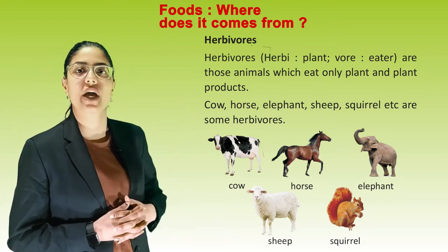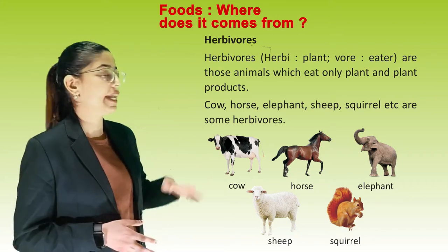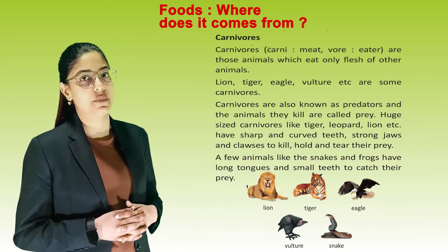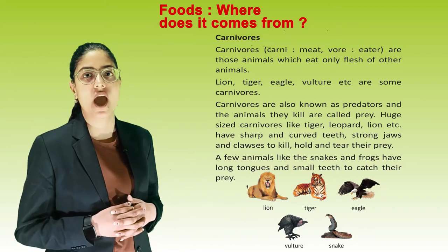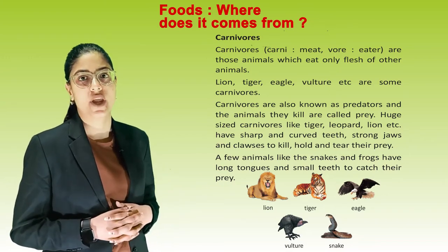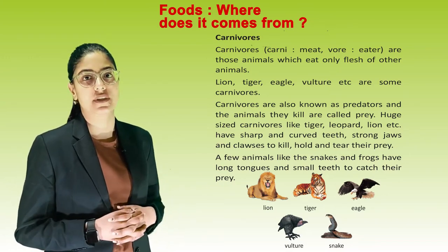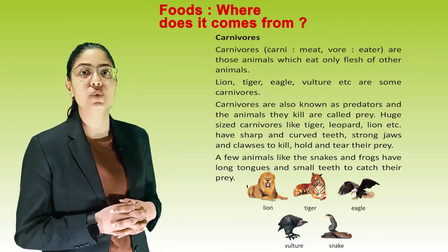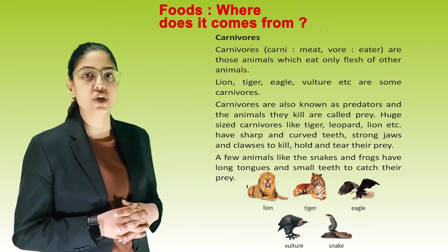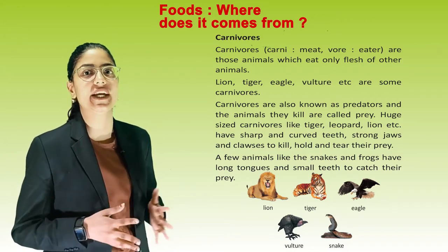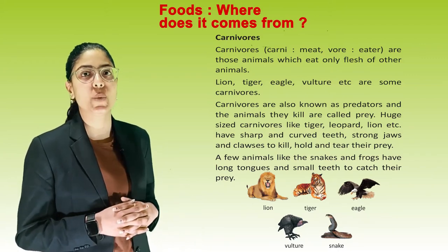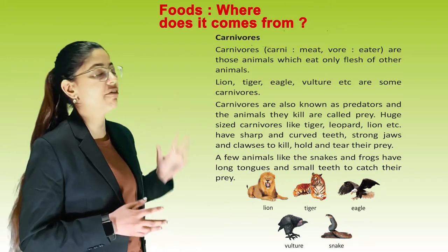Carnivorous - 'carni' means meat, whereas 'vore' means eater. Those animals which eat only flesh of other animals are carnivorous, like lion, tiger, eagle, and vulture. Carnivores are also known as predators, and the animals they kill are called prey. Large carnivores like tiger, leopard, and lion have sharp and curved teeth, strong jaws and claws to kill, hold, and tear their prey. A few animals like snakes and frogs have long tongues and small teeth to catch their prey.